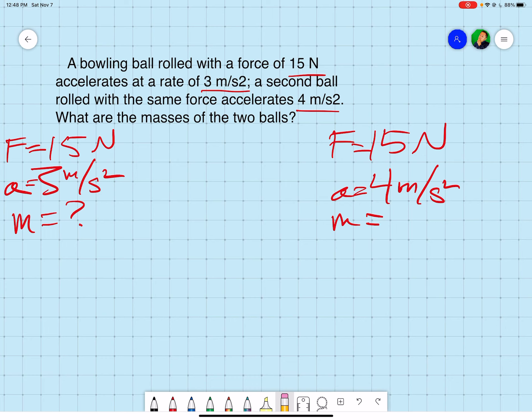The equation for both is F equals ma. If we need to solve for mass, I'm going to divide both sides by a. The a's get cancelled out.